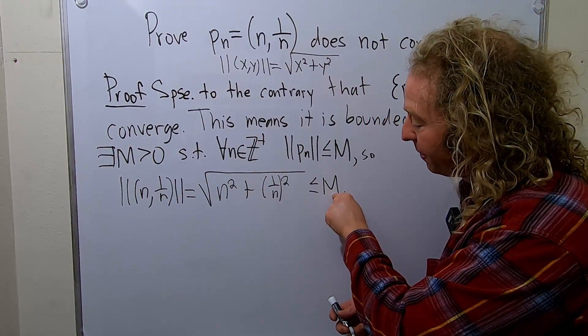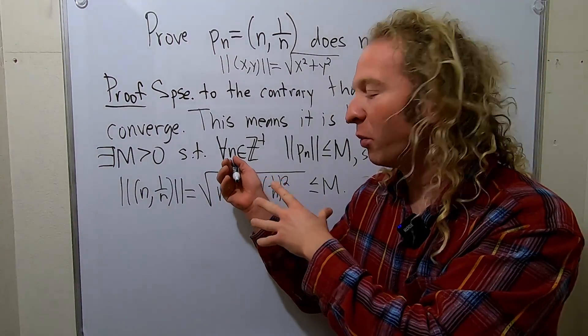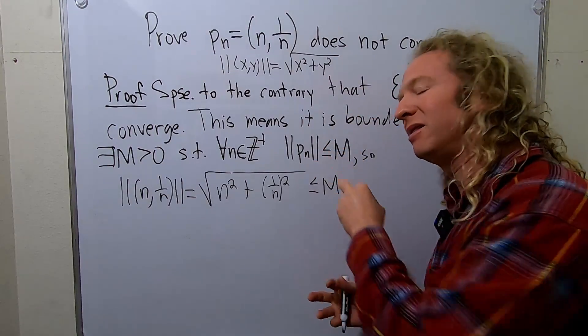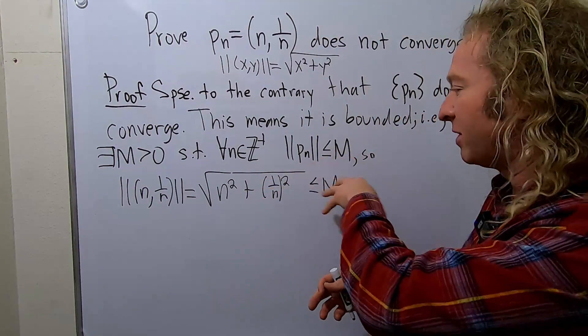So we have a big M here. So in order to reach a contradiction, intuition tells us that we have to choose a value for little n that is somehow related to big M. And that's how we know to choose little n something with the big M.